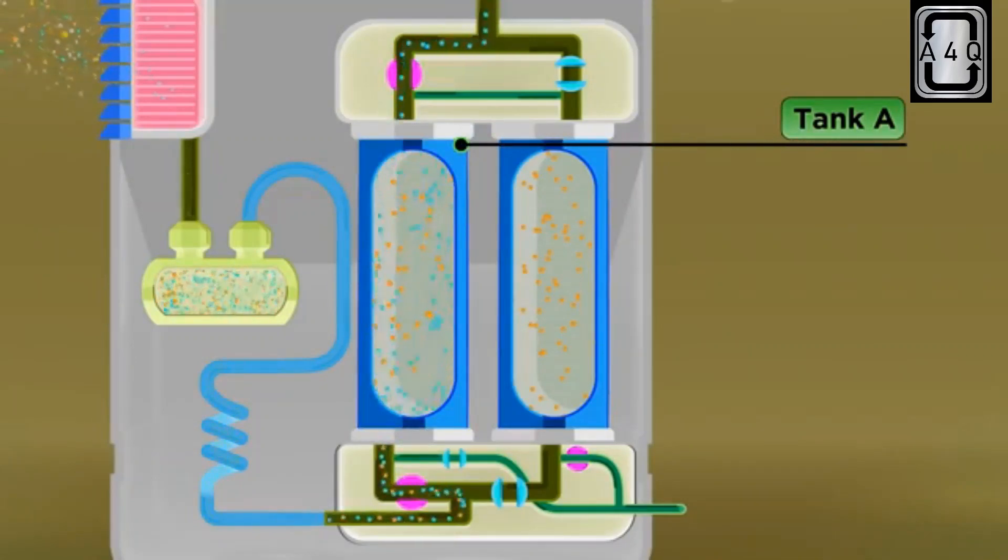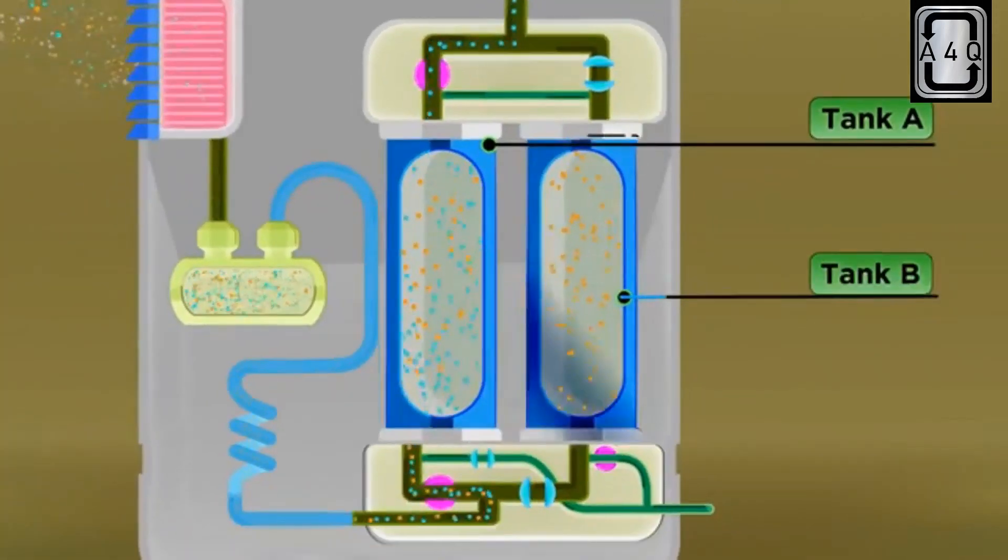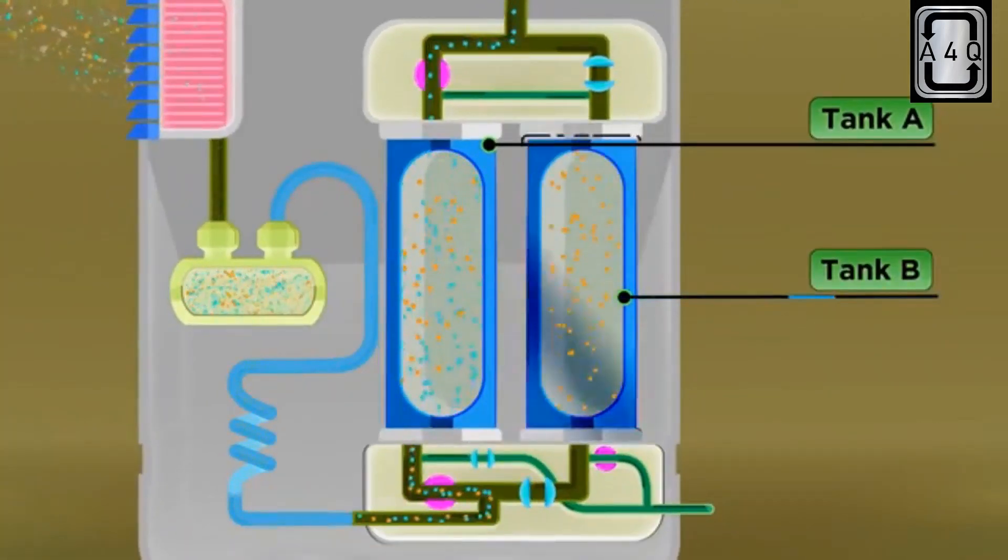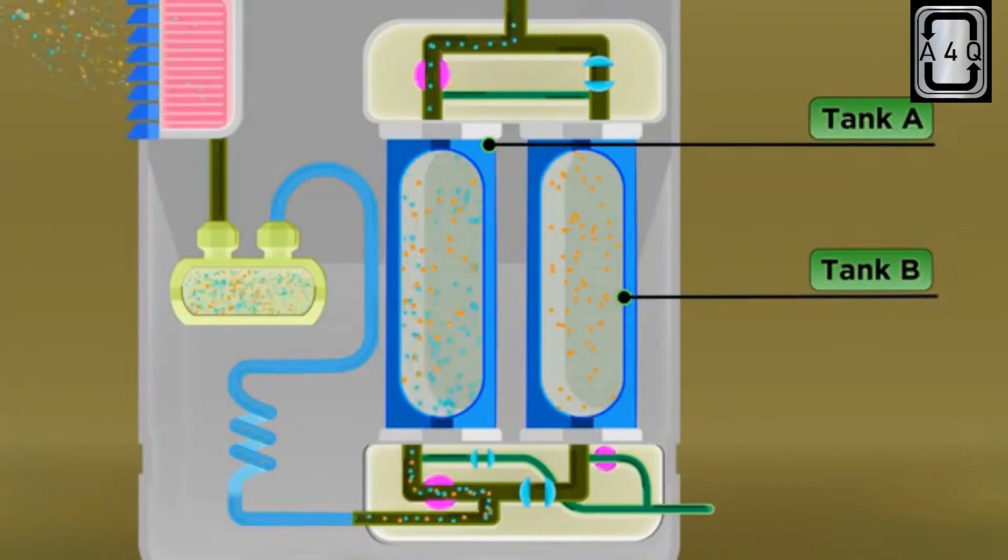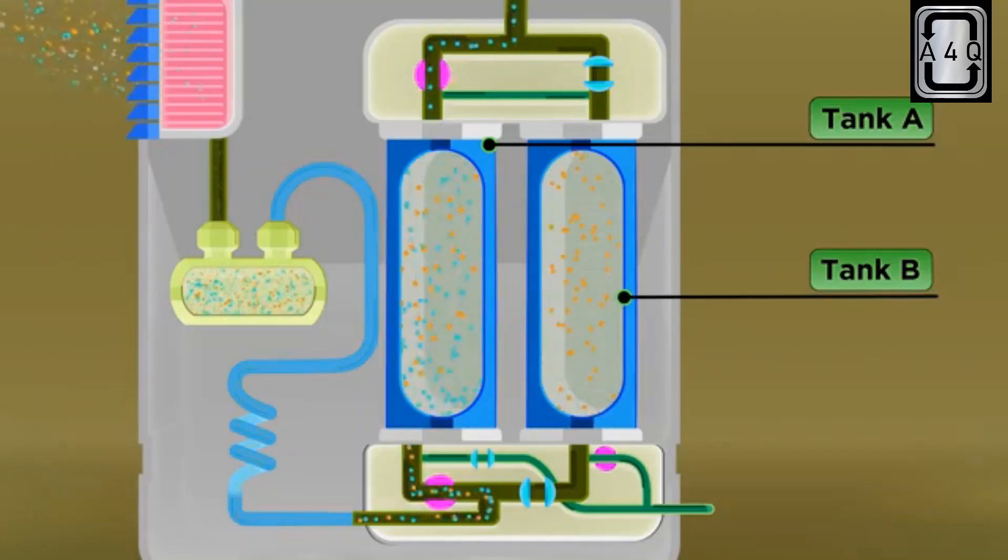Meantime, in tank B, there is no high pressure air passing through, which means that when the pressure reduces, the nitrogen molecules that were stuck to the zeolite filter now start floating around, and part of this pure oxygen from tank A passes through tank B in a reverse flow to remove all these floating nitrogen molecules.